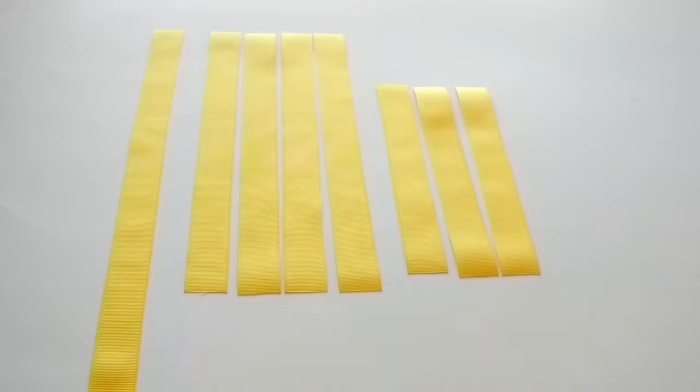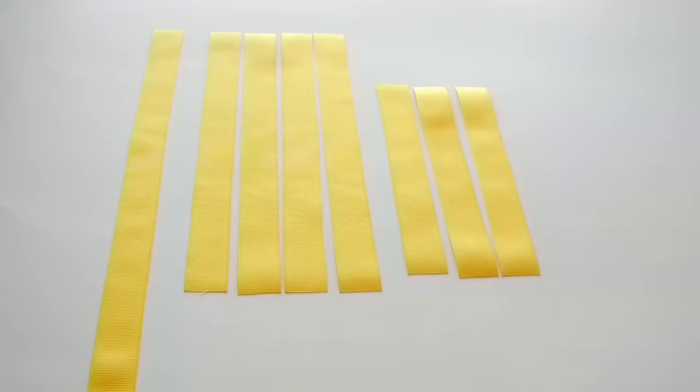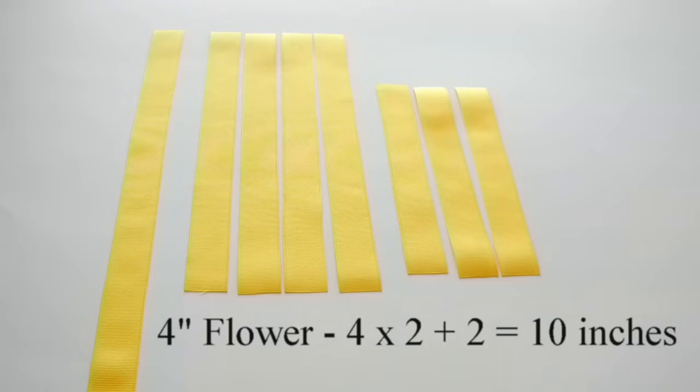Cut out your pieces of ribbon depending on the size of the flower you want to make. Our flower is going to be four inches, so if you want a four-inch flower, we're going to take four times two, which is eight, and then add two, which is ten.